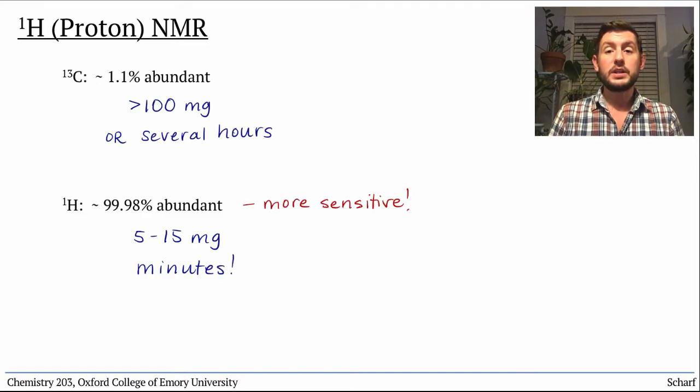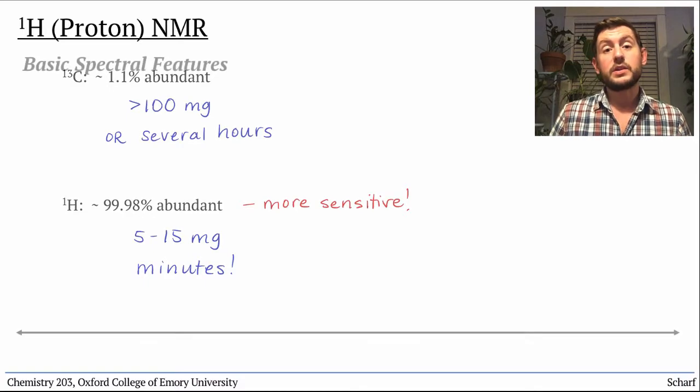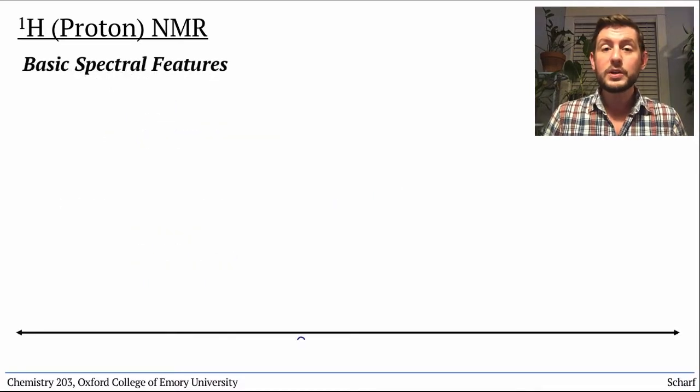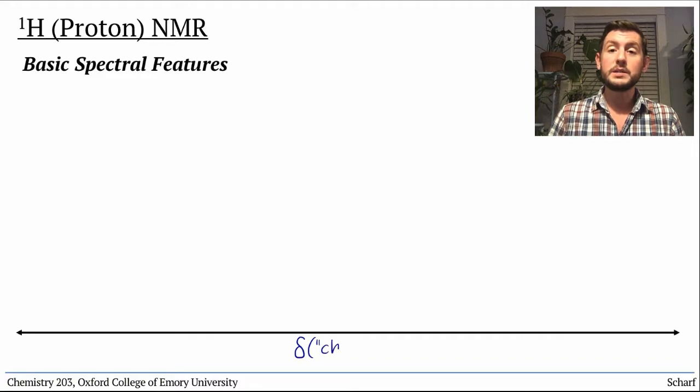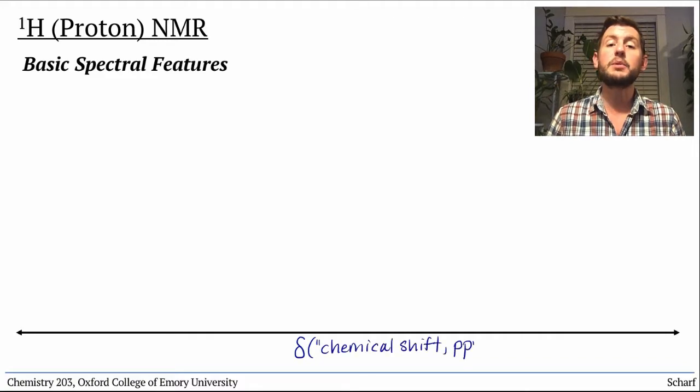Additional information can be gleaned from a proton spectrum that can't be determined by C-13 NMR, but the basics are the same. A proton spectrum has a normalized absorption frequency on the x-axis, delta for chemical shift in units of ppm, and runs from low frequency at the right to high frequency at the left.